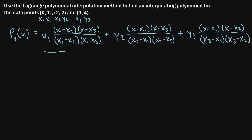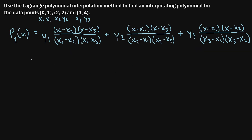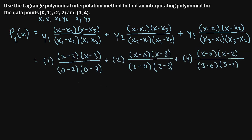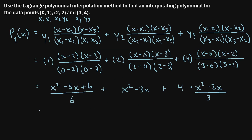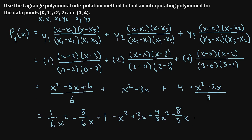For our example, this is the entire formula. All we have to do is plug in all the values for the y's and x's. After filling in all x and y values and simplifying, our final polynomial turns out to be (1/2)x² − (1/2)x + 1.